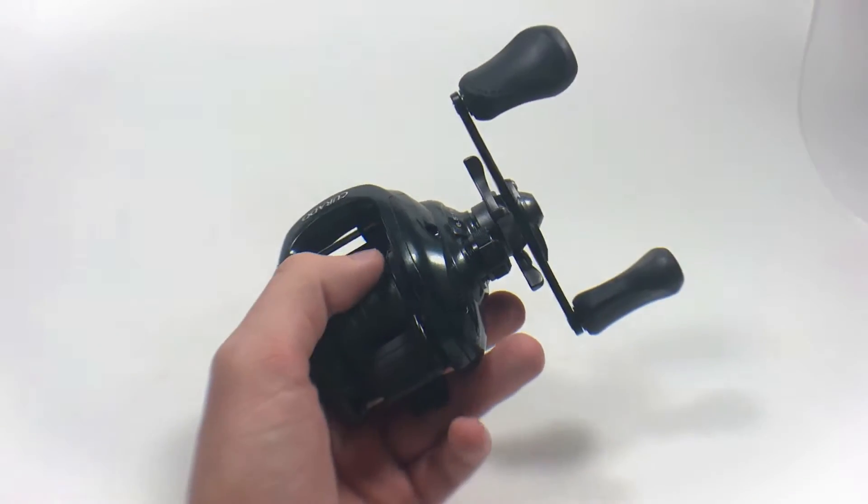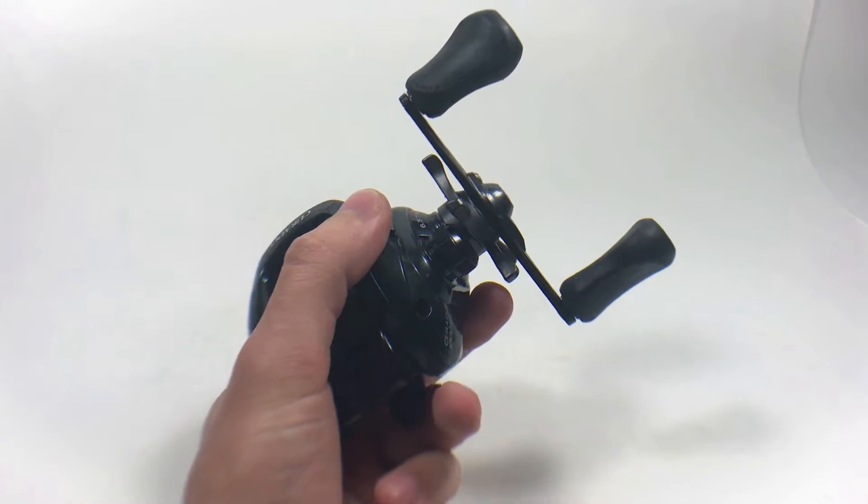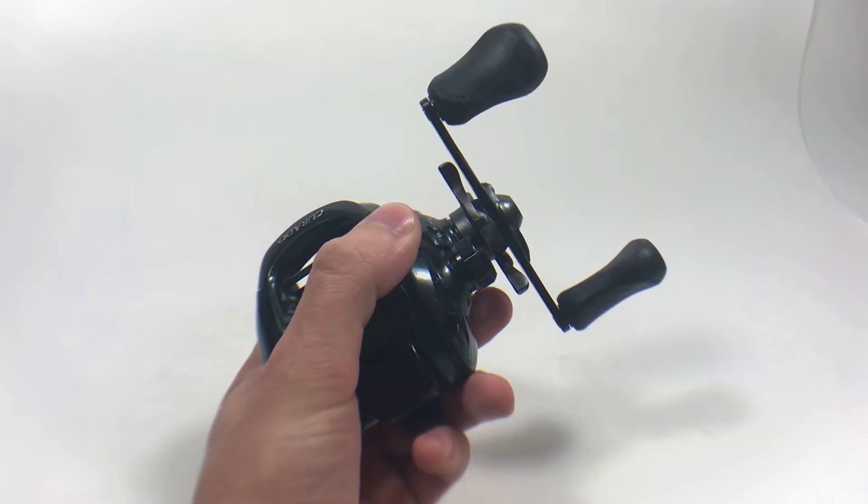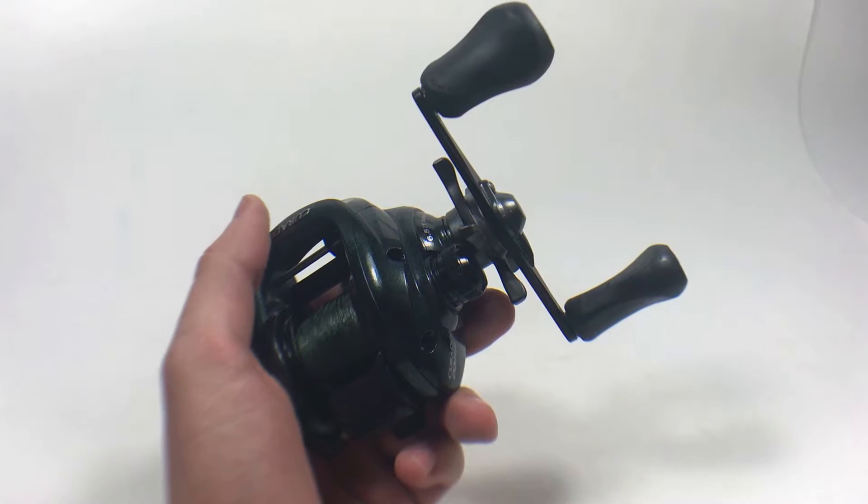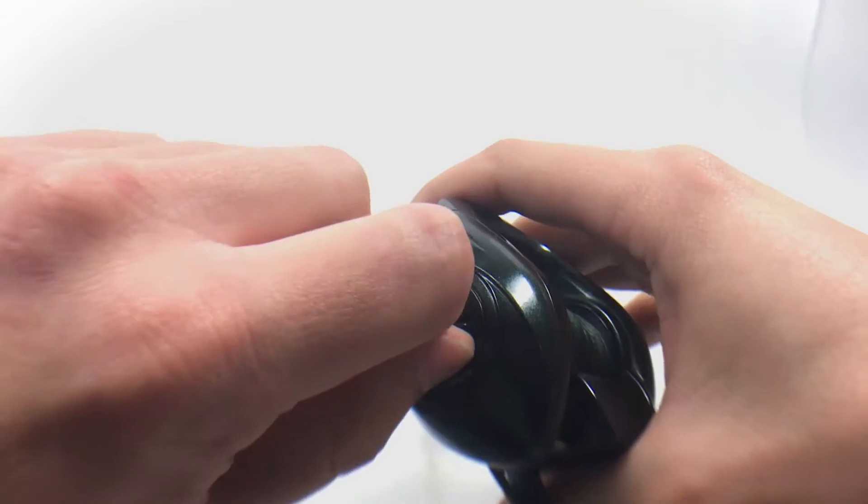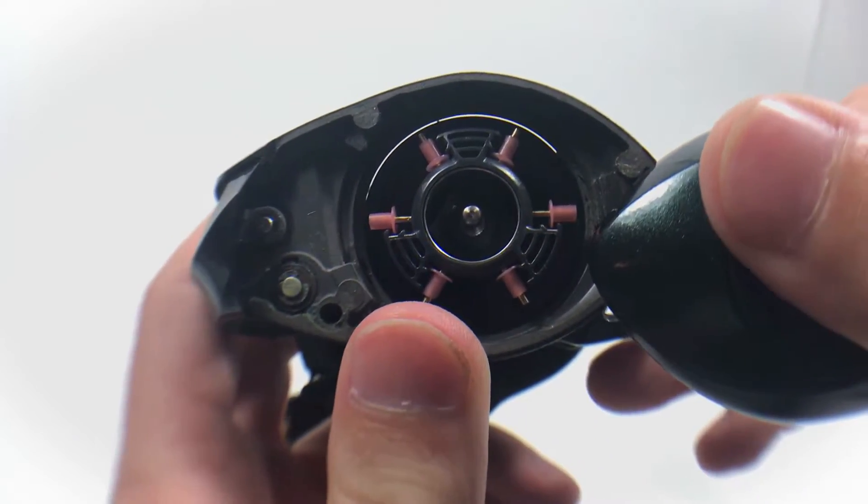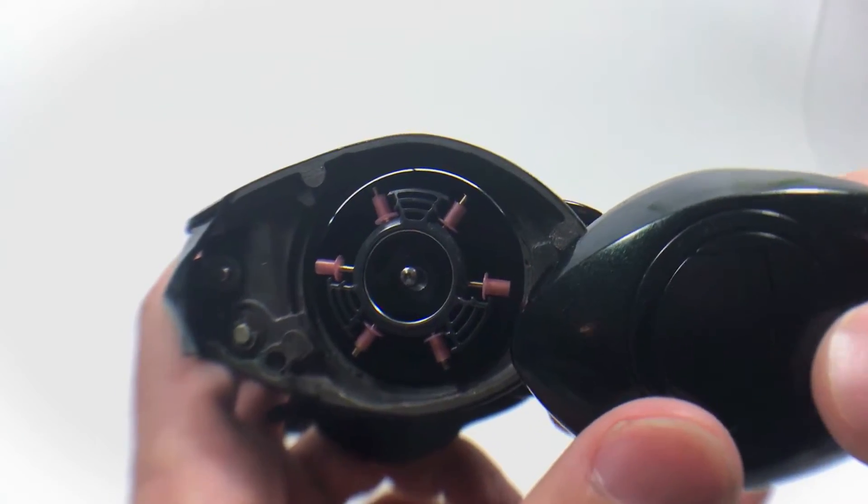Here are some of the reel specs. 6.5 to 1 gear ratio, 7.2 ounces, aluminum frame, graphite star drag. And from that and maybe some of the other specs, you can tell it definitely wasn't designed like its bulletproof previous model. Here is the braking system on the inside, basically the same as the Citica that I showed you earlier.